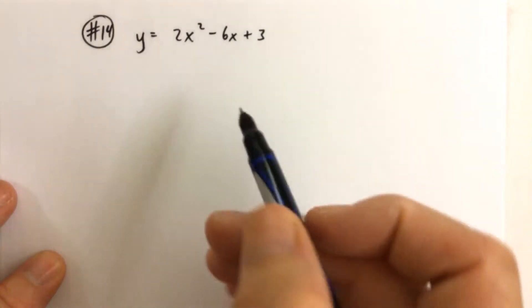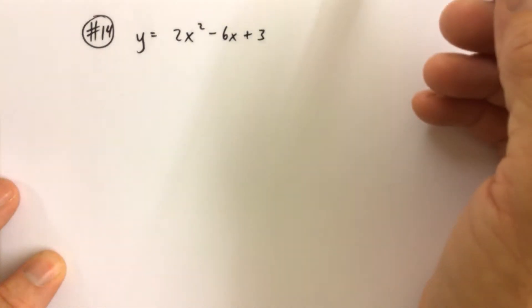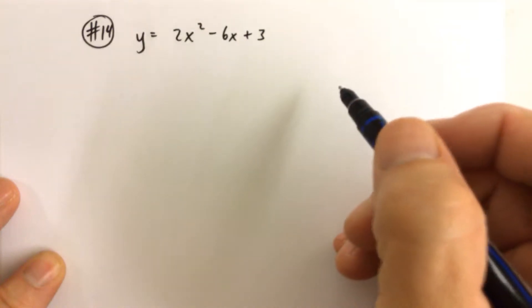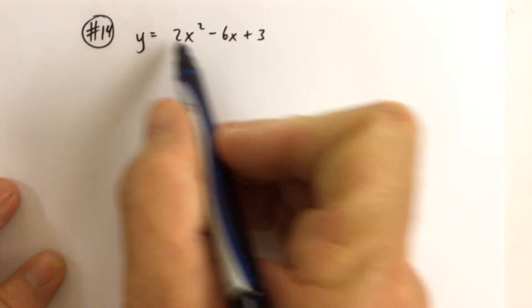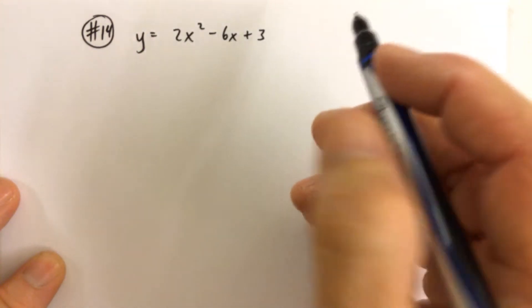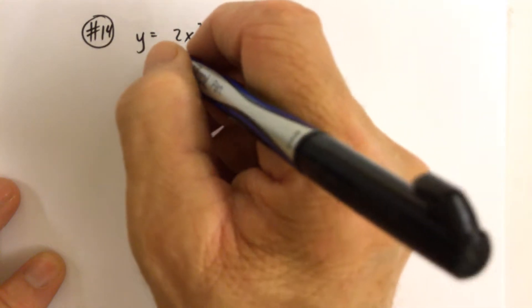For problem number 14, just like number 12, we're asked to find vertex, axis of symmetry, max, min, and range. So if you want more detail on how to do number 14, watch the video I made for number 12. It gives a little bit more background as to why we're doing certain things.